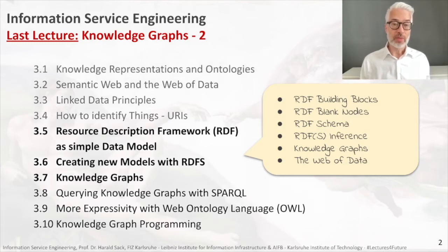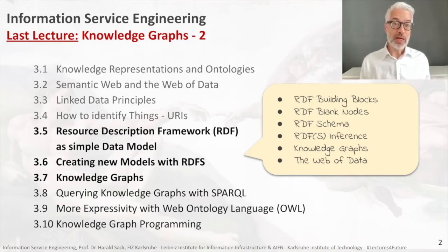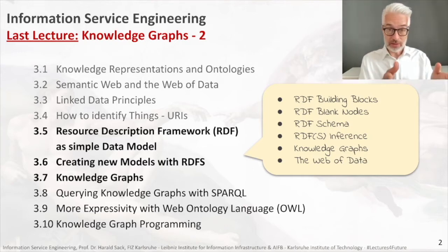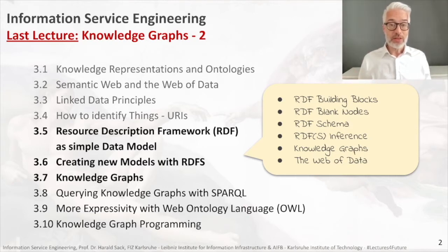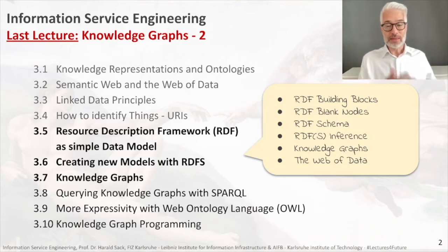Last week we learned about the Resource Description Framework. This was an easy means to encode information in a transferable way on the Semantic Web. Information or knowledge was structured like little sentences — you might remember — we had a subject, a predicate or property, and an object. Based on that, we learned the basic building blocks of RDF, as well as RDF blank nodes, entities, literals, and all that.